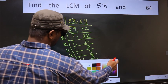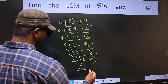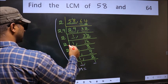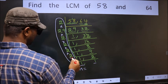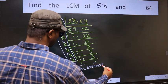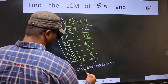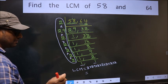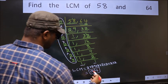We got 1 in both places. So our LCM is the product of these numbers: 2 times 29 times 2 times 2 times 2 times 2 times 2. When we multiply these numbers, we get 1856. So 1856 is our LCM.